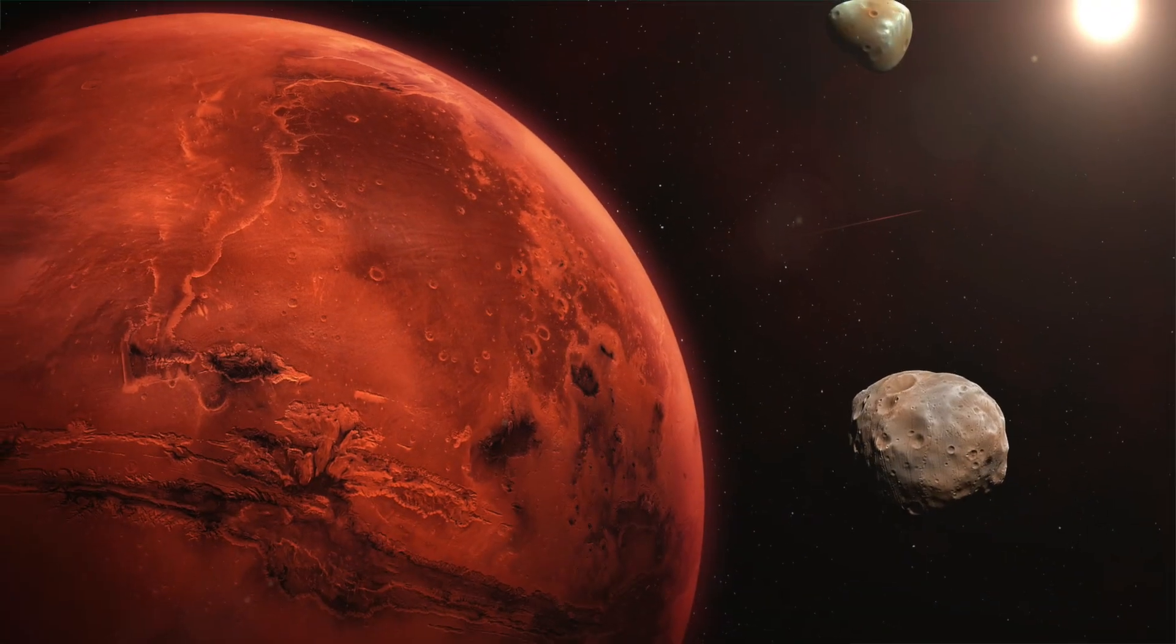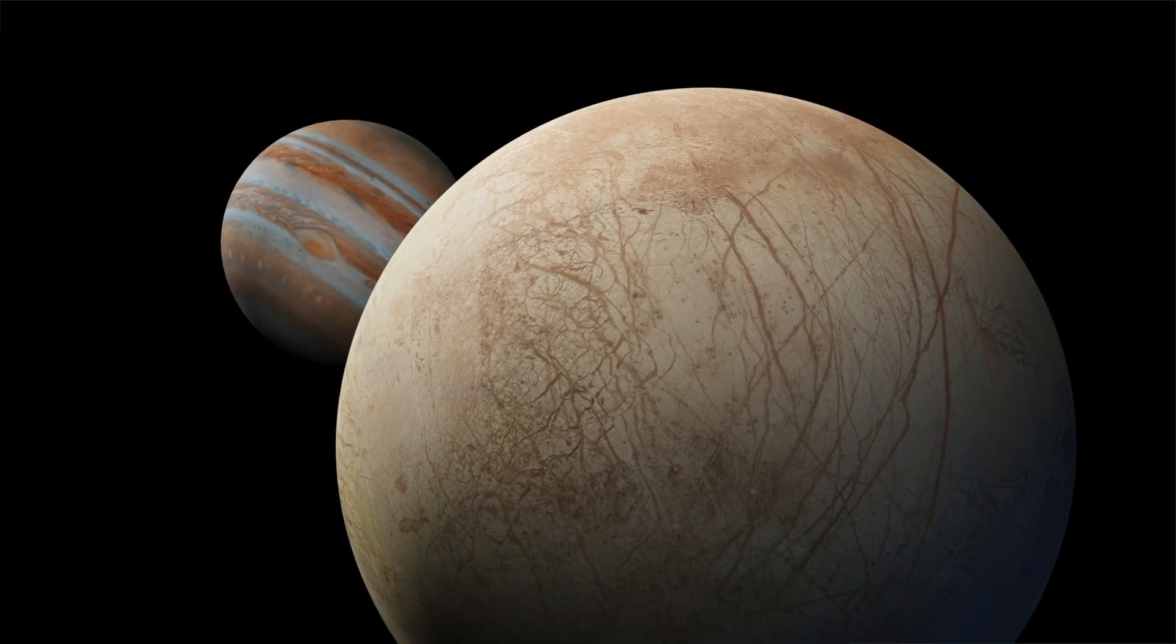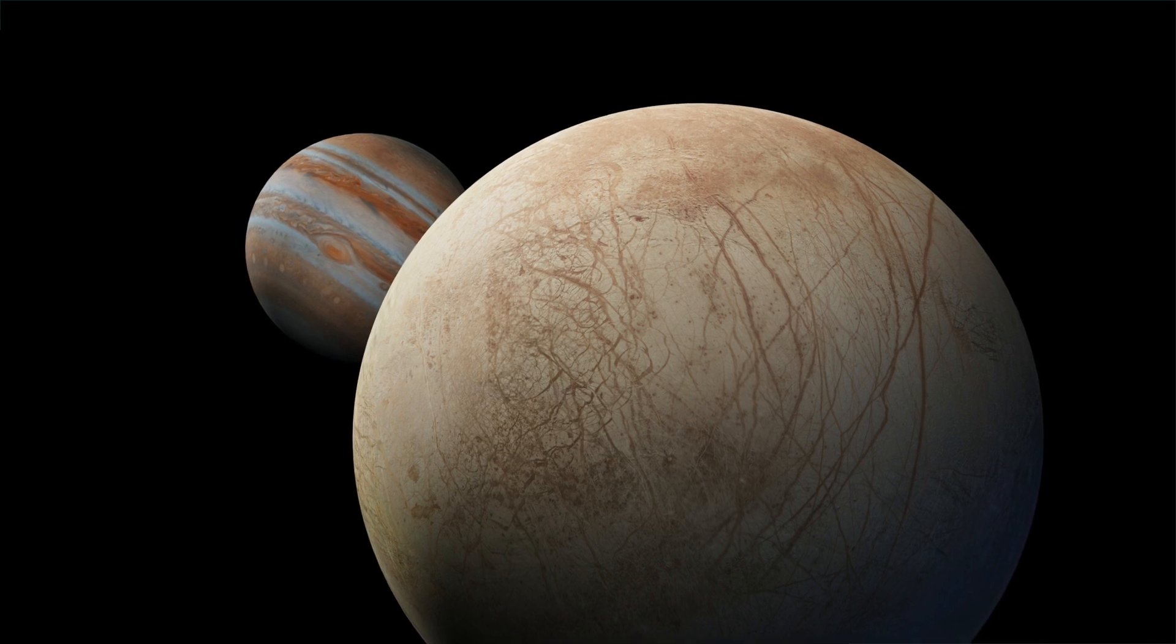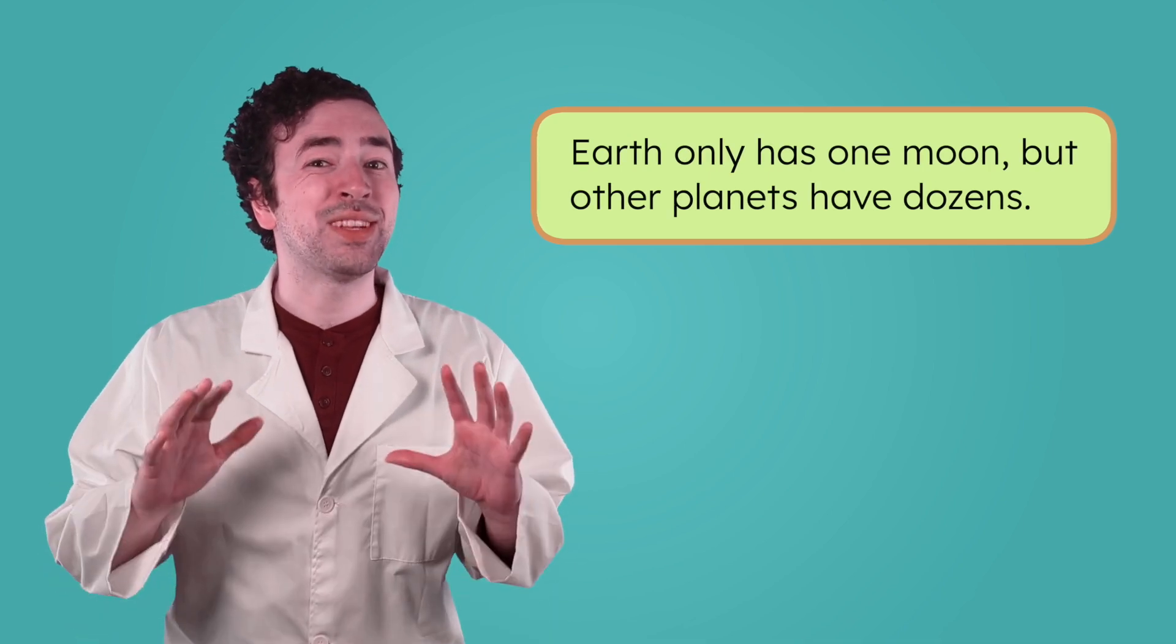Some are made of solid rock. Others are covered in thick layers of ice. Some even have oceans buried deep beneath their surfaces. Moons can be big or small, smooth or covered in craters. Earth only has one moon, but other planets have dozens.